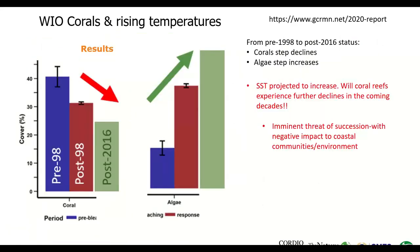Looking at this in broader perspective, there is a decline in coral cover over the years and a sharp increase in algae, suggesting a phase shift and succession taking place — which is quite worrying. Given projected sea surface temperatures over the coming decades, the question is whether coral reefs will experience further declines. This is something everyone is concerned about, and it is time to take action and try to save this ecosystem.